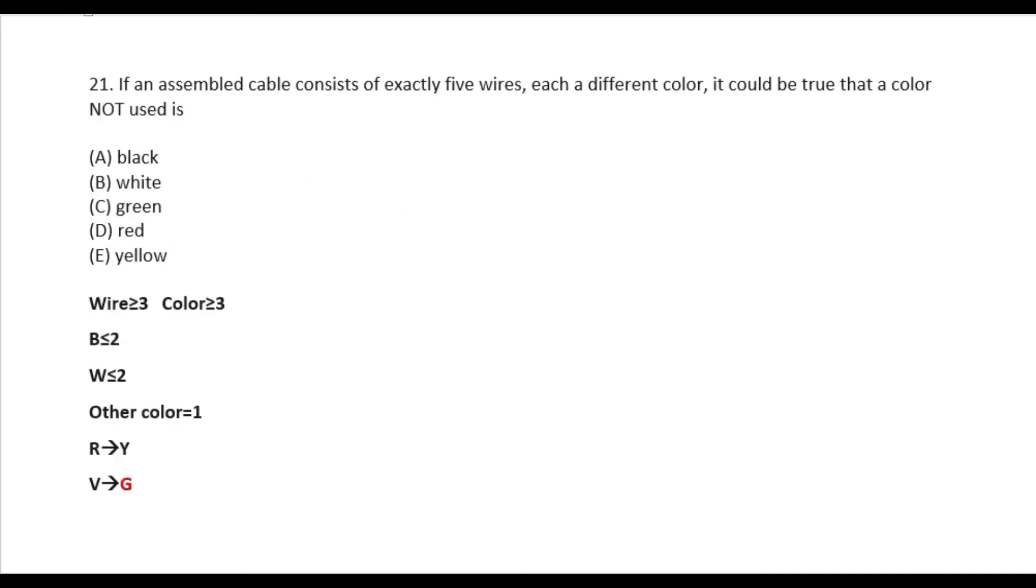If an assembled cable consists of exactly 5 wires, each a different color, it could be true that a color not used is. What do you want to assemble cable? Exactly 5 different colors wire is used. So which color is used. Condition 1, there is a conflict between green and violet. If you want to use green, so obviously 5 uses is used. It means that there is no green use or no violet use.